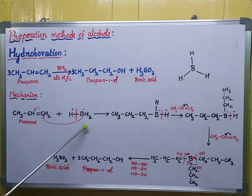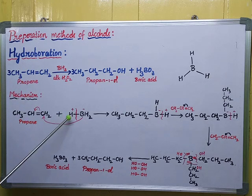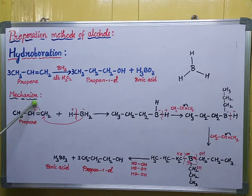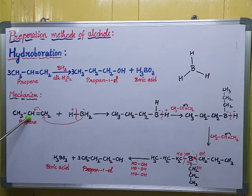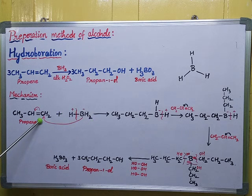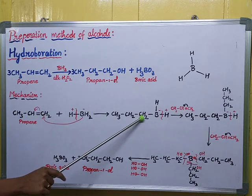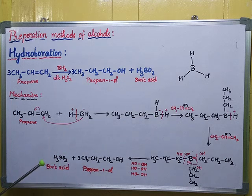In the mechanism, propene is attached with BH3 in the beginning — one propene molecule reacts with BH3. BH3 dissociates into BH2 minus and H plus. I am shifting the bond, breaking the double bond here. This carbon gets a positive charge and this carbon gets a negative charge. The positively charged carbon is attacked by BH2, and the CH minus is attacked by H plus — giving CH3-CH2-CH2-BH2.